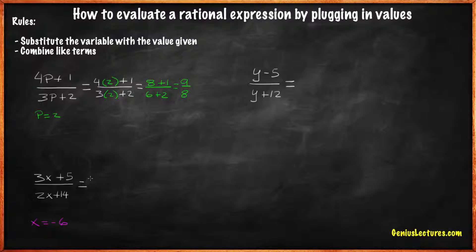Here, we just need to replace x with negative 6. 3 times negative 6 plus 5 over 2 times negative 6 plus 14. Negative 18 plus 5 over negative 12 plus 14. Negative 13 over 2.